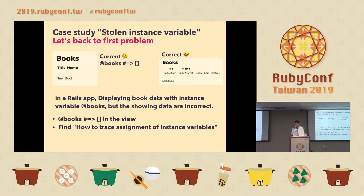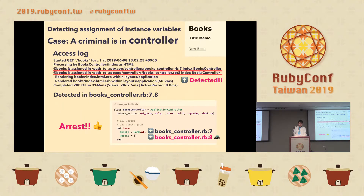We got the access log and we get a log line from TracePoint — it's detecting the assignment correctly. Let's go back to the first problem. The right side is the correct case, but our application shows incorrect data. This is a case where the criminal is in the controller — the detected log shows the criminal is in books_controller.rb line 8. We have two log lines: line 7 is normal, line 8 is the criminal. We can detect it.